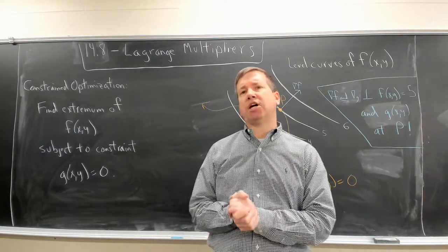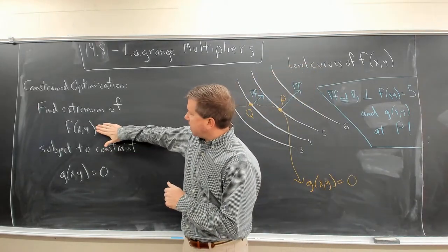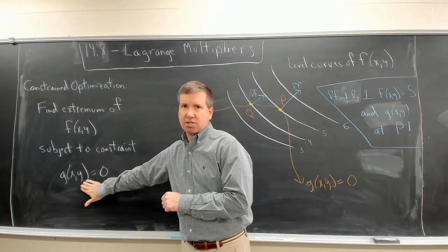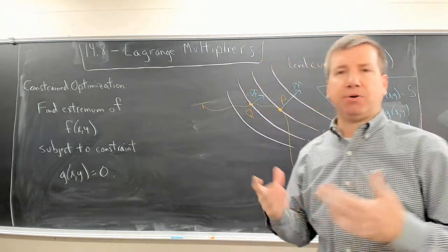So in some sense, we're now juggling two functions. Optimizing our objective function subject to this constraint given by some function g. So how do we do this?